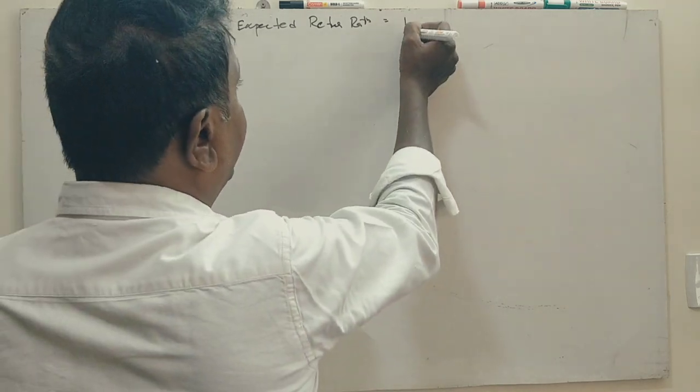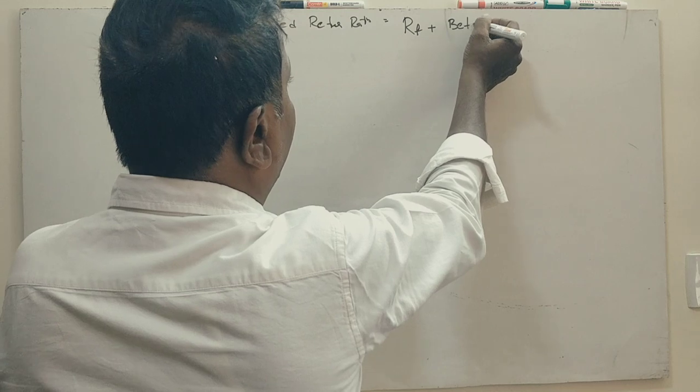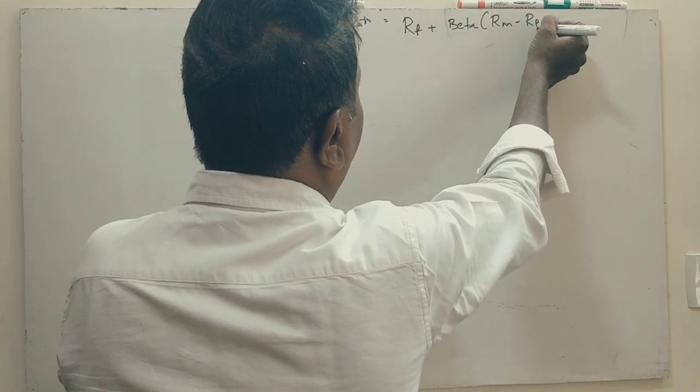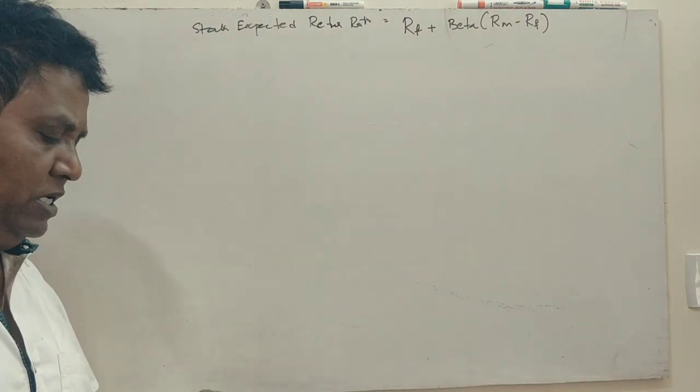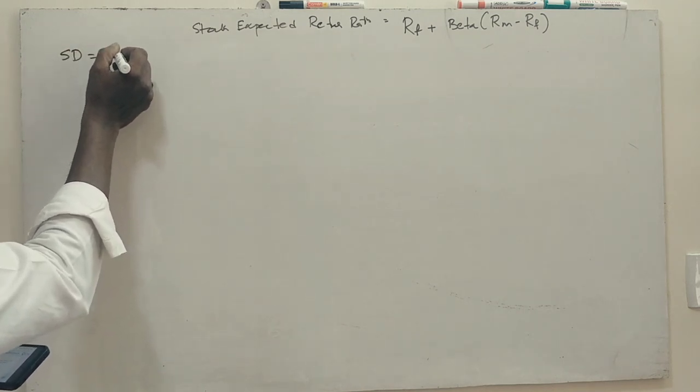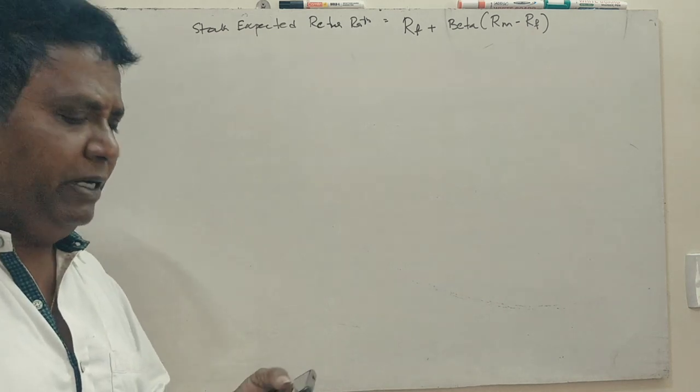This is risk-free return plus beta into market return minus risk-free return. Here, beta is nothing but beta. See, here, standard deviation is nothing but beta. Standard deviation is nothing but beta.